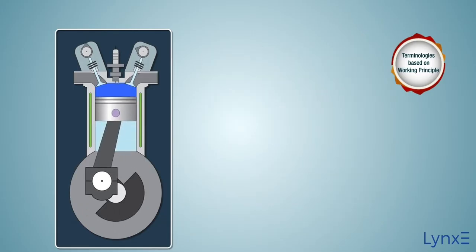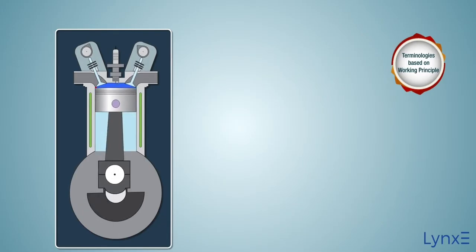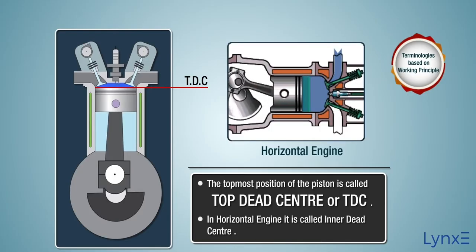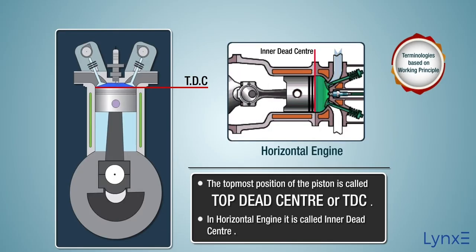The topmost position of the piston towards the cover and inside of the cylinder is called top dead center, or TDC. In a horizontal engine, this is known as inner dead center.